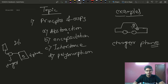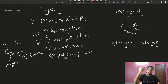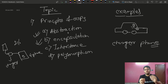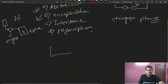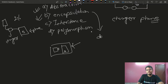Now let's come to encapsulation. In technical terms, the wrapping of data and functions together into a single unit is called encapsulation. When we have a class, there is data and there is a function — both are wrapped together. Think of a box: you put a phone, a charger, and a pin inside the box. That box encapsulates the phone and charger. This is encapsulation.